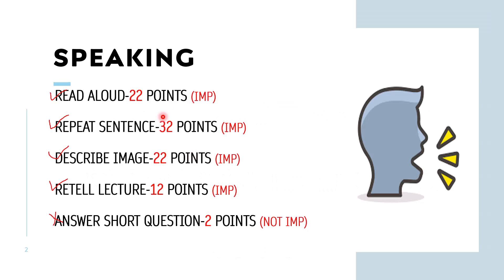In the speaking section there are five modules: first is Read Aloud, second is Repeat Sentence, third is Describe Image, fourth is Retell Lecture, and last is Answer Short Question. Read Aloud is the first task of the speaking section, but if you are appearing in a real PTE test then the first section of speaking is the self-introduction. You can introduce yourself, or you can skip that question. So the first important task is Read Aloud.